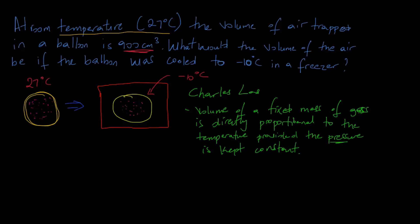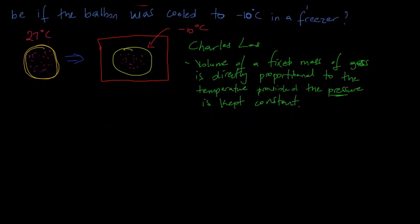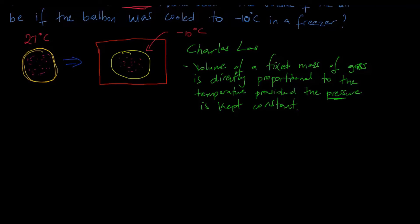The formula for Charles's Law says that V1 over T1 is equal to V2 over T2, where V1 and T1 are the initial volume and initial temperature, and V2 and T2 are the final volume and the final temperature.